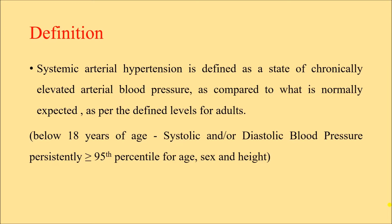In the next slide we shall see the different levels of blood pressure for adults, and based on those levels we shall consider whether a person is hypertensive or not. For any person below 18 years of age, his or her systolic or diastolic blood pressure should be persistently above the 95th percentile considering the person's age, gender, and height. For today's discussion, we shall only talk about adults.